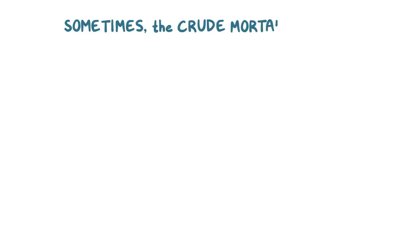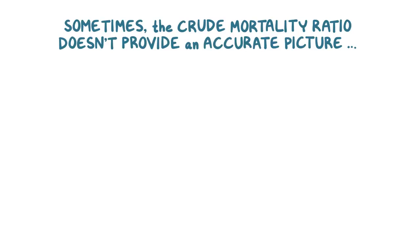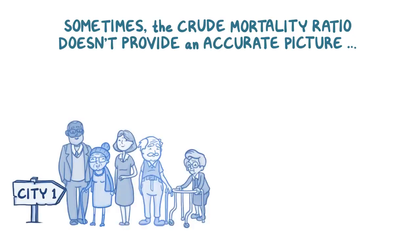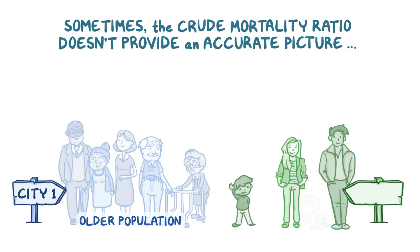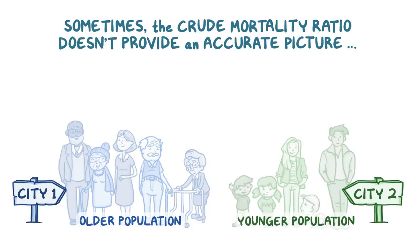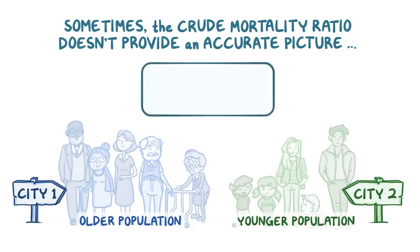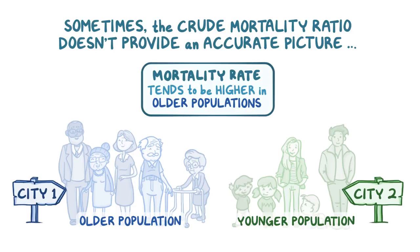Sometimes, though, calculating the crude mortality ratio doesn't provide an accurate picture of the two populations. This is usually because the populations have different distributions of certain characteristics, like age, sex, or race. For example, City 1 has an older population with a large percentage of people over the age of 40, whereas City 2 has a younger population with only a small percentage over 40. Mortality rates tend to be higher in older populations, so the crude mortality rate for City 2 might be lower simply due to its younger age distribution.